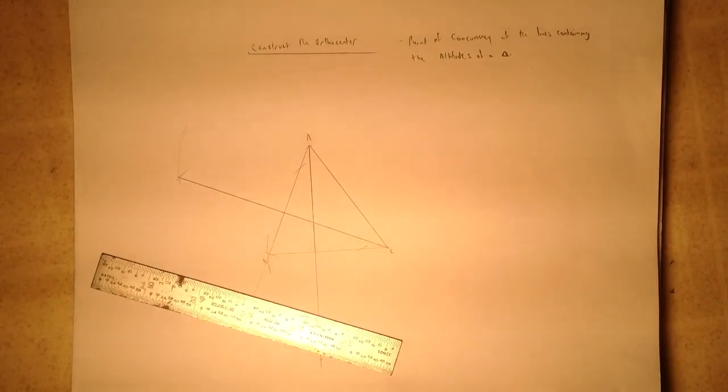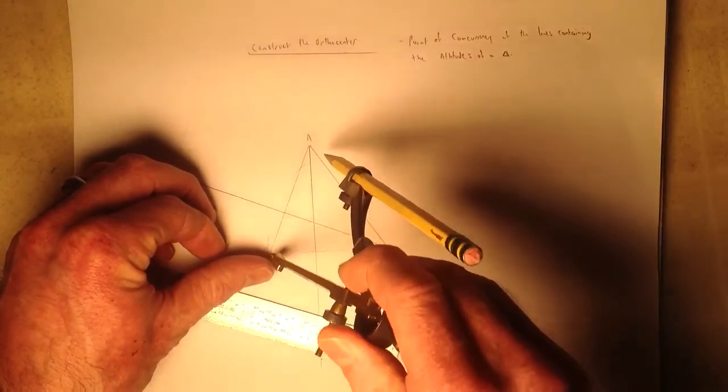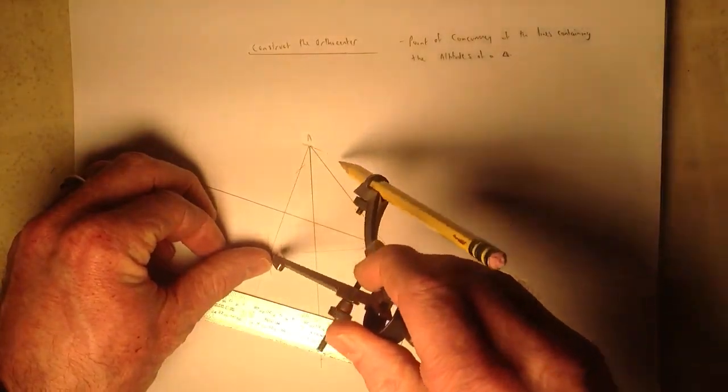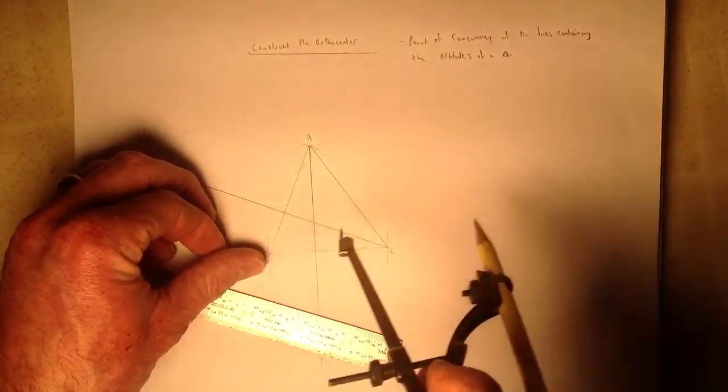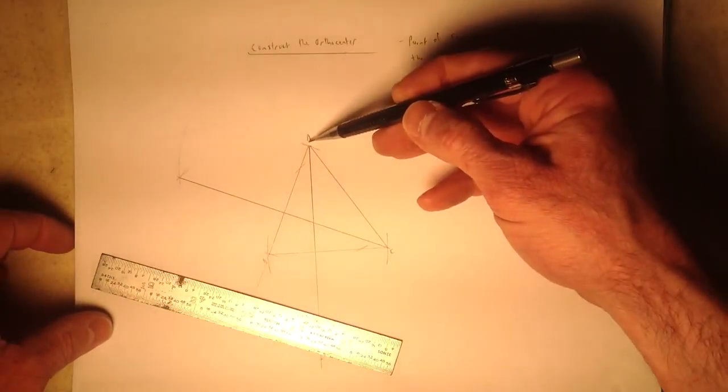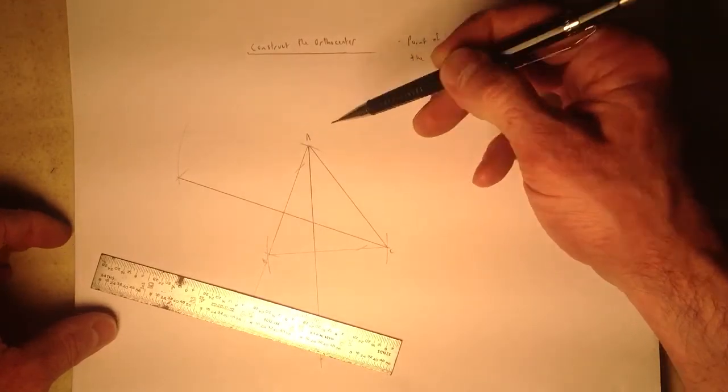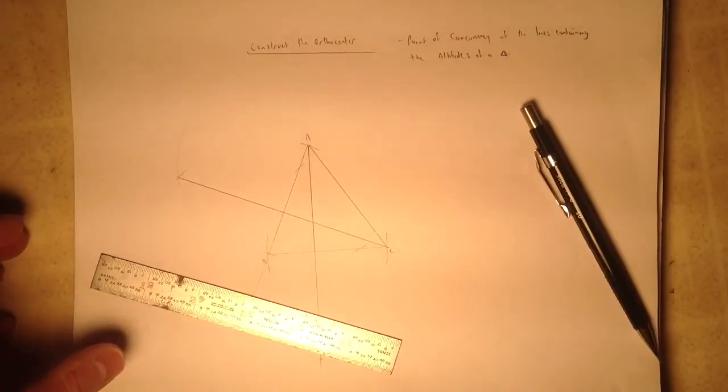Finally, we need to construct the altitude to vertex B. So I'll put my compass at point B and again swing an arc, swing a second arc. You can see that those arcs just caught the lines, that is the segment AC, just short of C and just short of A. So we'll be able to use those just fine.